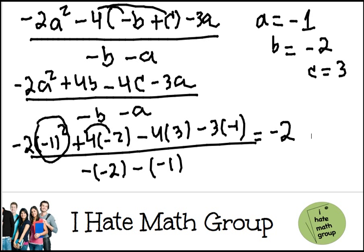Positive 4 times negative 2 is negative 8, minus 4 times 3 is just negative 12, and negative 3 times negative 1 is just positive 3. We're almost done.